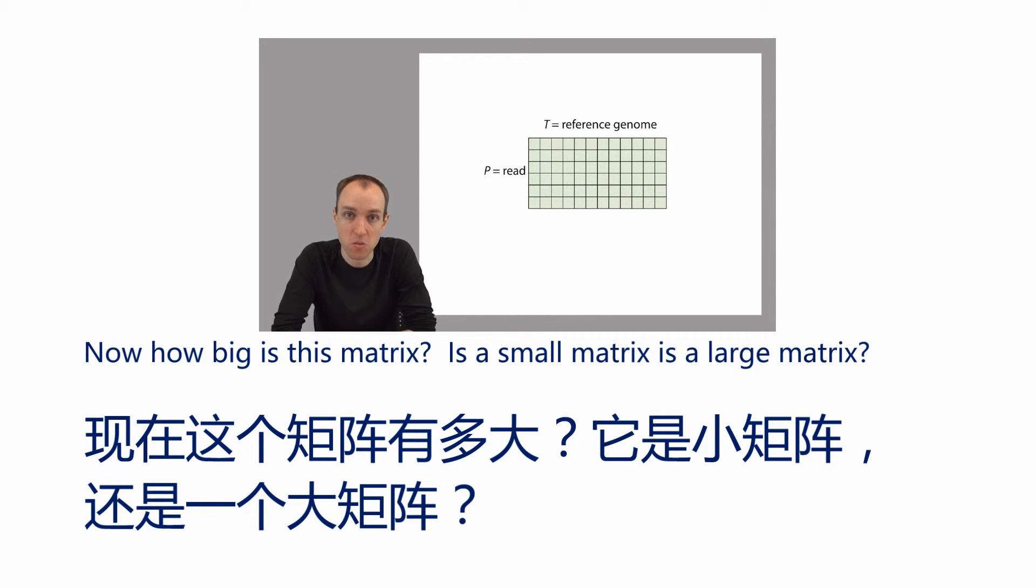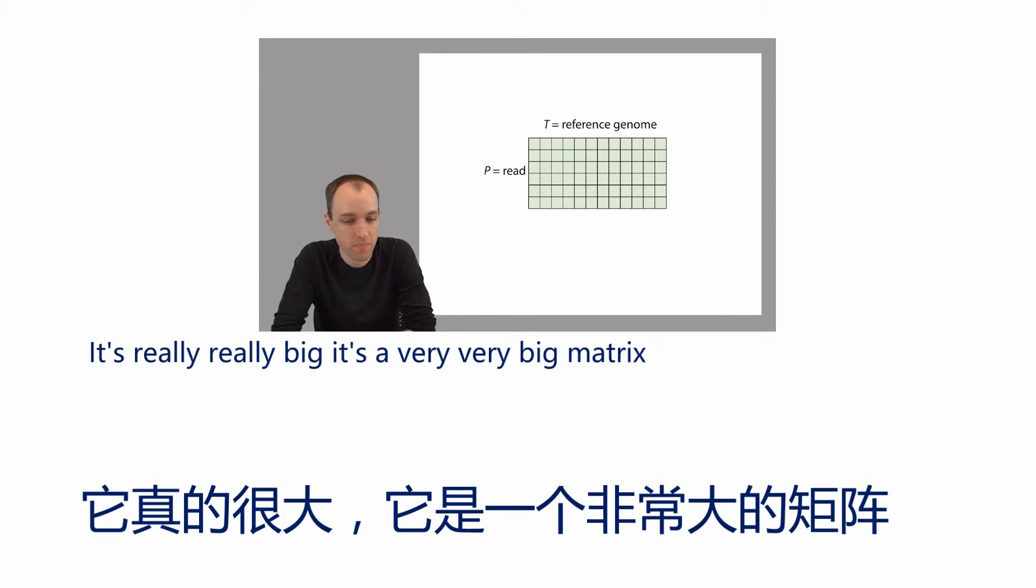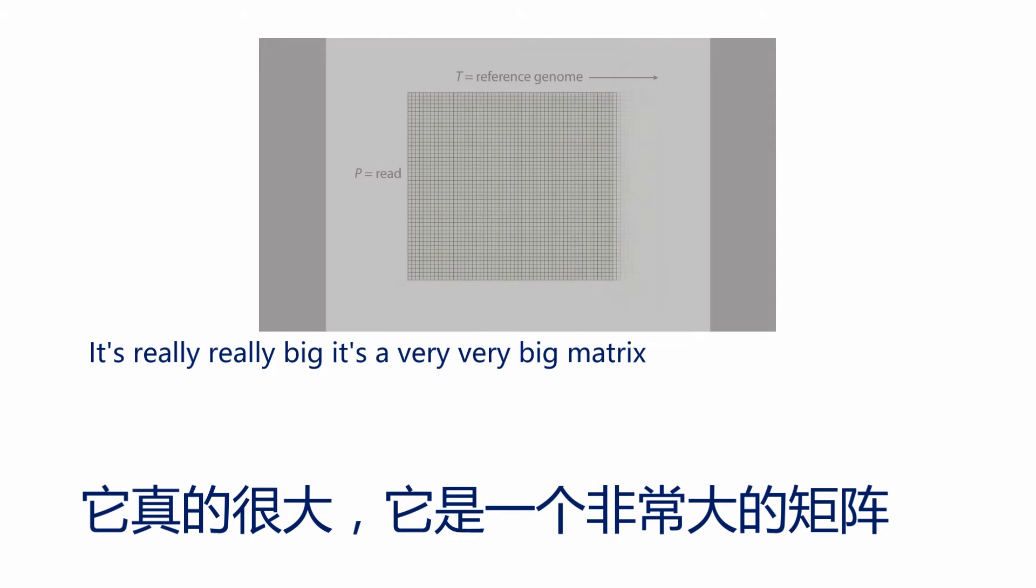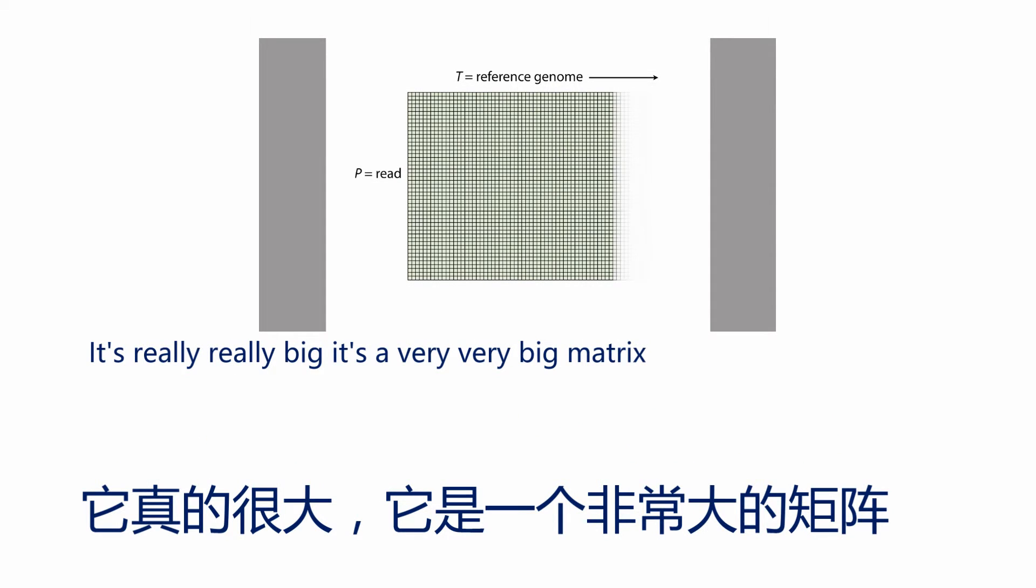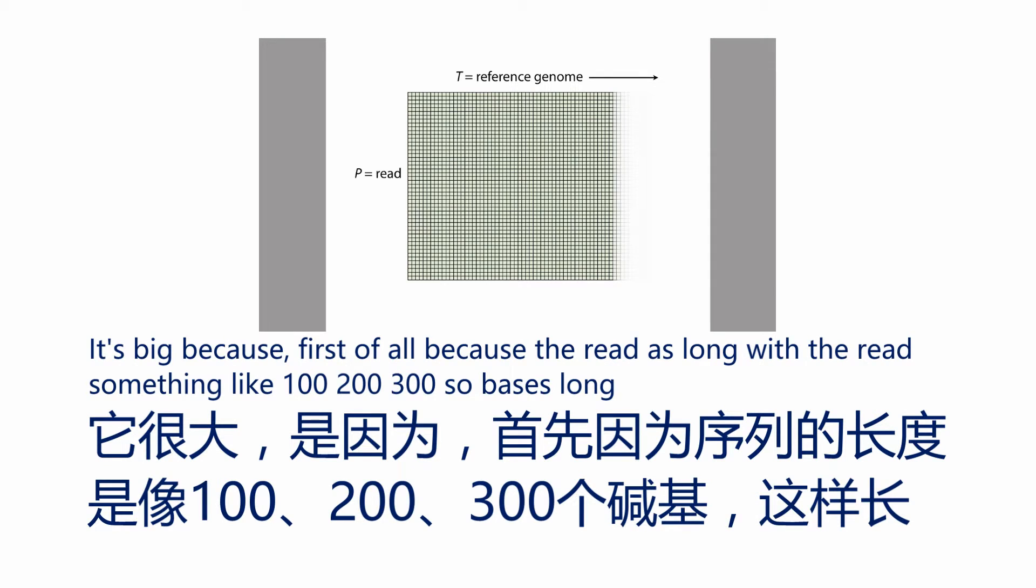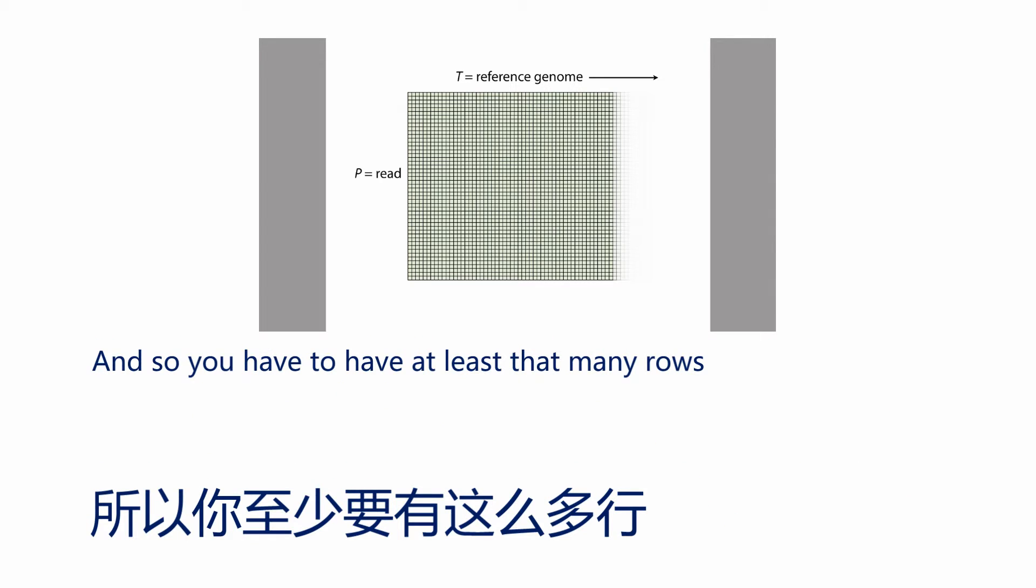Now, how big is this matrix? Is it a small matrix? Is it a large matrix? It's really, really big. It's big because, first of all, the read is long. The read is something like 100, 200, 300 or so bases long, and so you have to have at least that many rows.